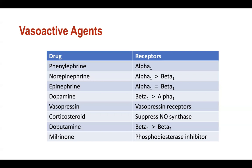Dobutamine is used primarily as an inotrope because it affects beta-1 first, beta-2 second, and only at extraordinarily high doses might you see some enhanced vascular tone. Never use dobutamine to treat blood pressure - never, never, never. And you as a nurse cannot titrate dobutamine without a direct order.